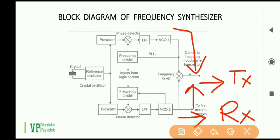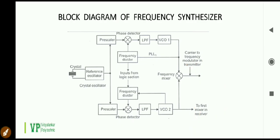The frequency divider block receives the divide-by numbers from the logic section, and these numbers are given by the MTSO computer. The divide-by numbers set the transmit and receive channel frequencies. The frequency synthesizer thus acts as a local oscillator which can produce a wide range of frequencies with high stability.